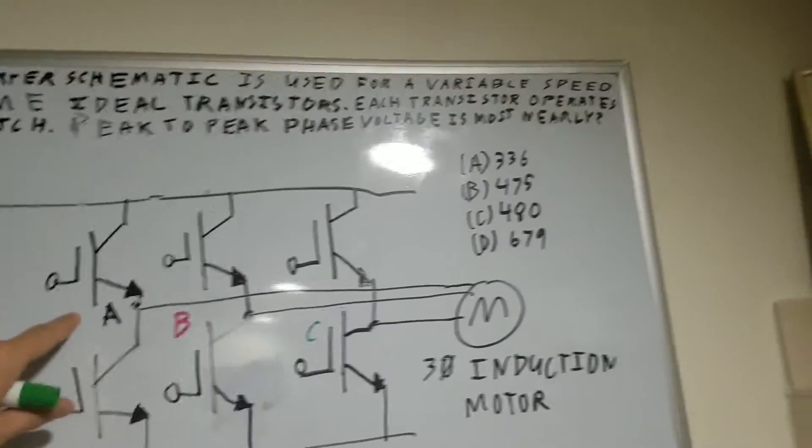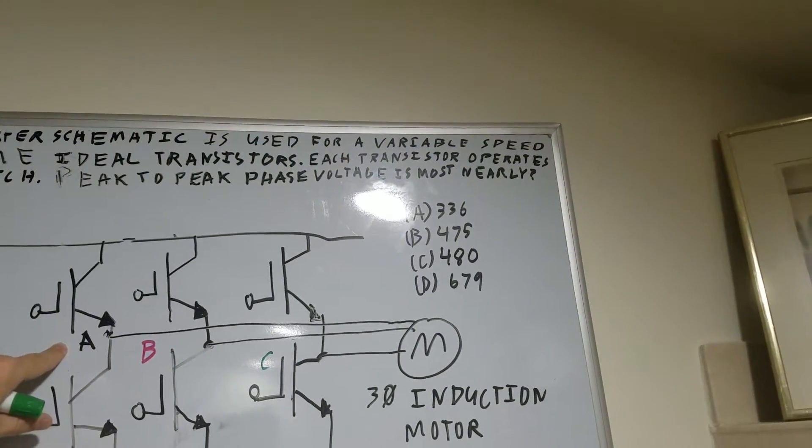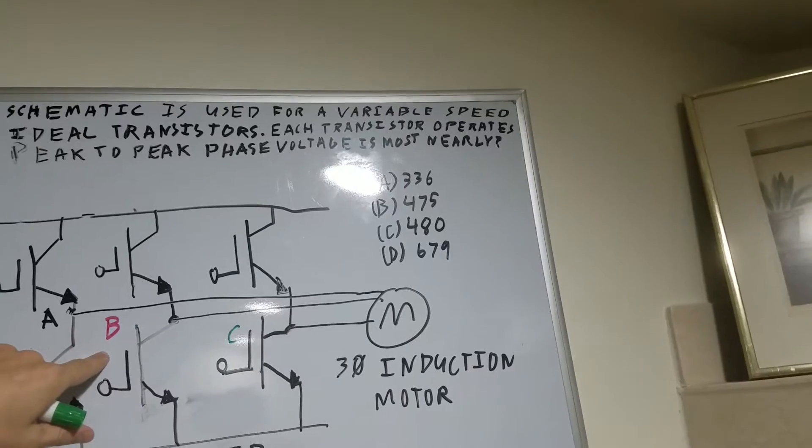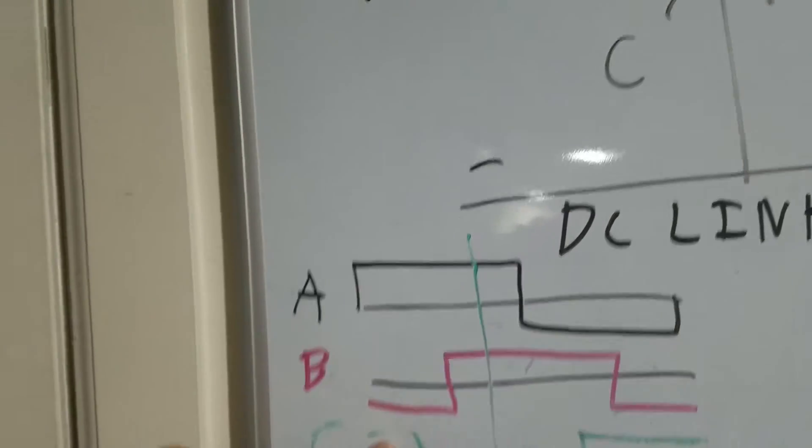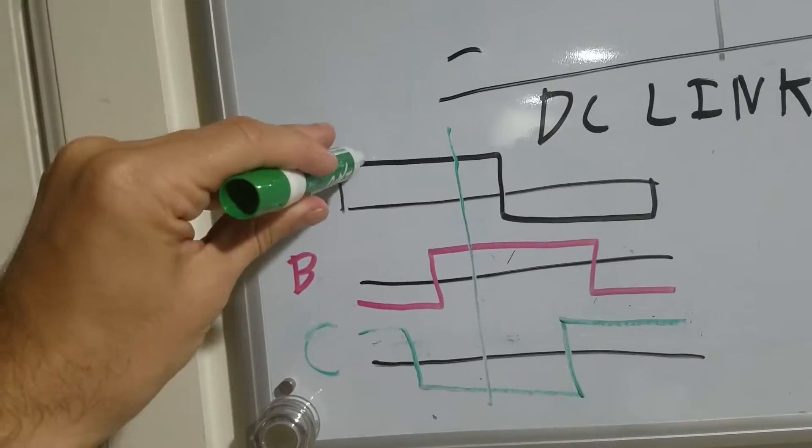So say you select phase A and phase B, and B is the ground so that would be right here, and C is on so we'll just do this time period.